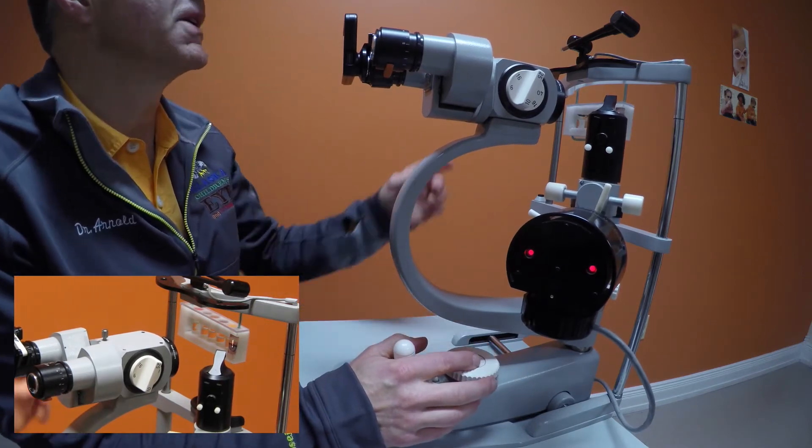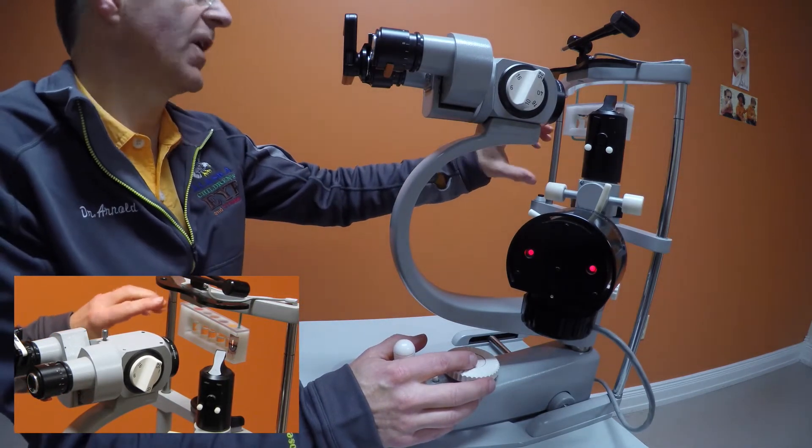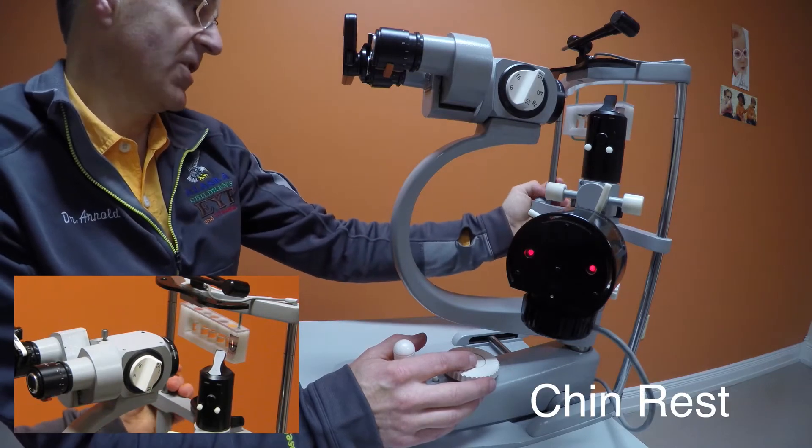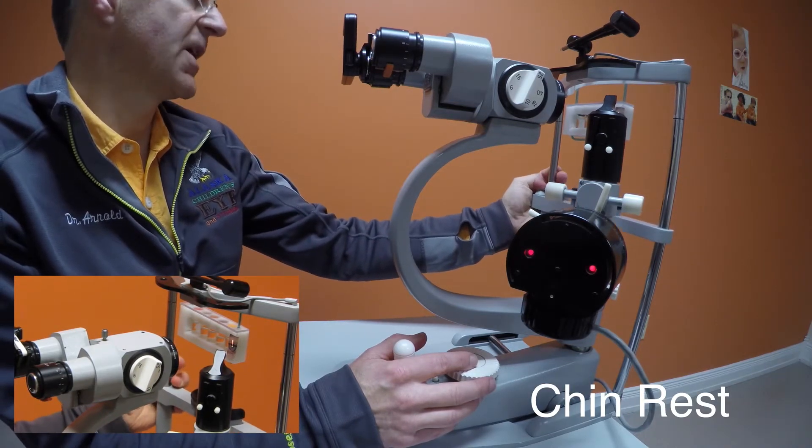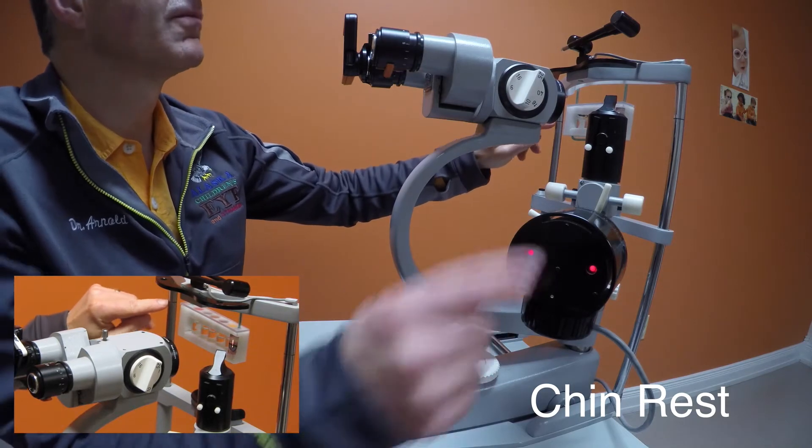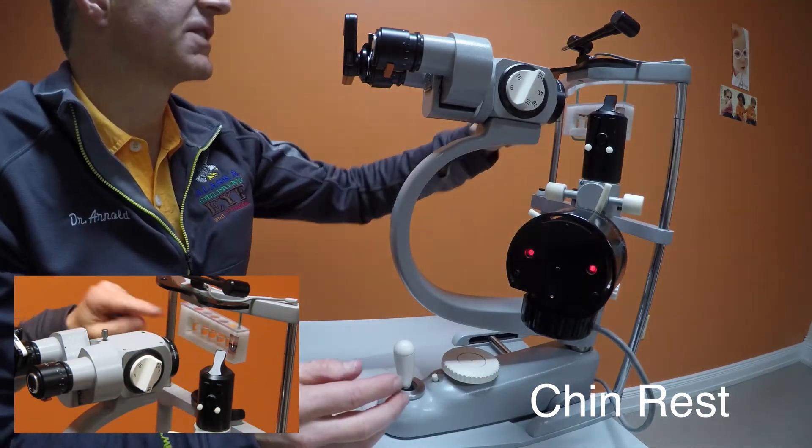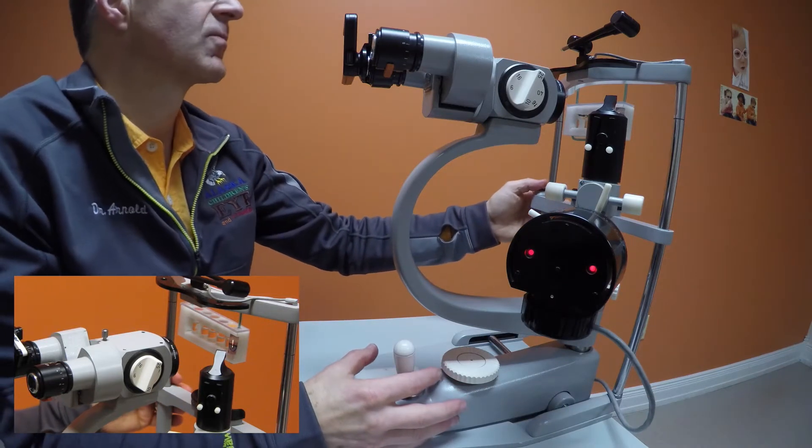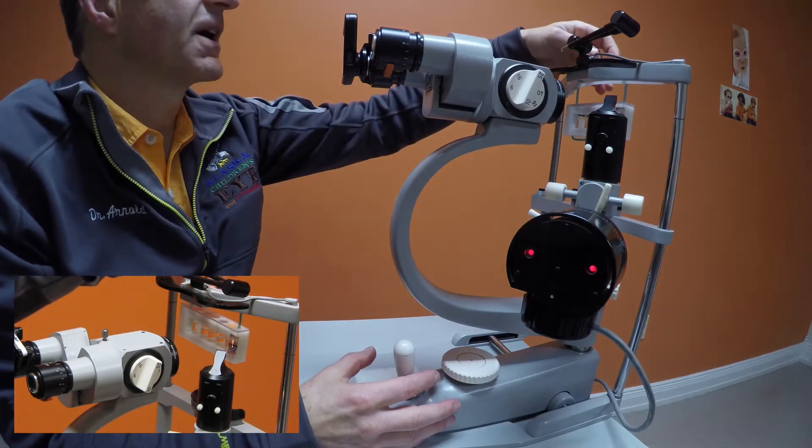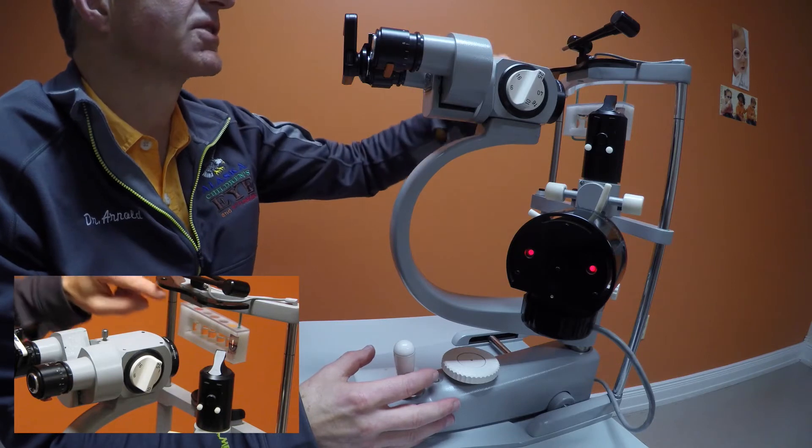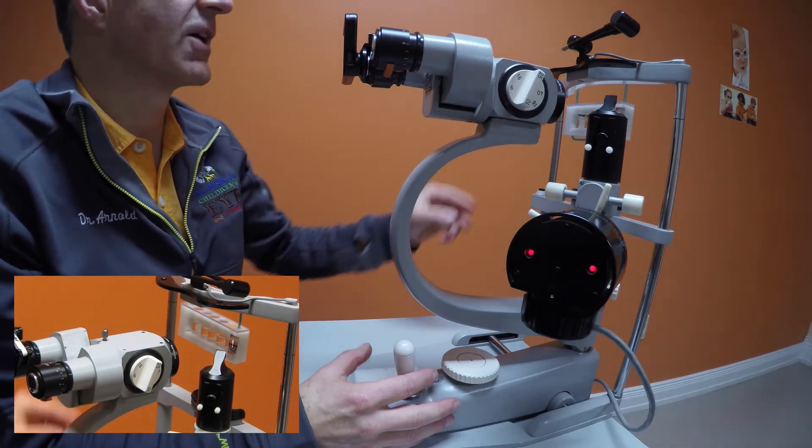The patient should be set in the chin rest. Here's the chin rest here. It can go up and down so that their eye is at the level of the black line, and that's about where the iritis test kit is right now. Their forehead should be up against the chin rest and the iritis test kit floats on that chin rest.